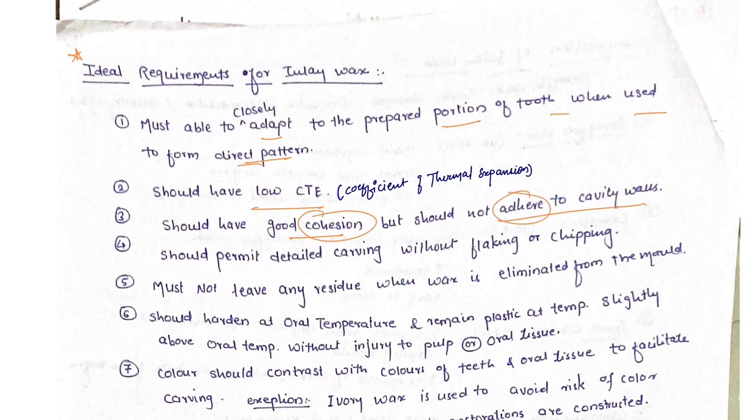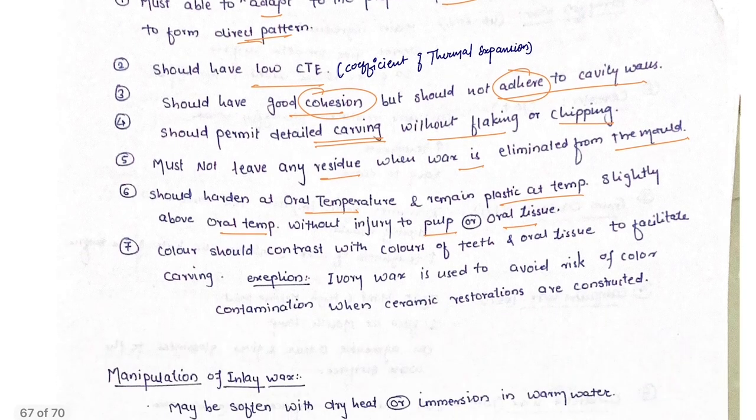Should have good cohesion but should not adhere to cavity walls. Should permit detailed carving without flaking or chipping. Must not leave any residue when wax is eliminated from the mold. Should harden at oral temperature and remain plastic at temperature slightly above oral temperature without injury to the pulp and oral tissue.